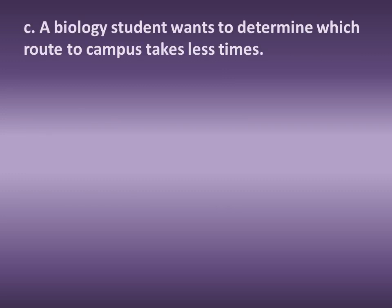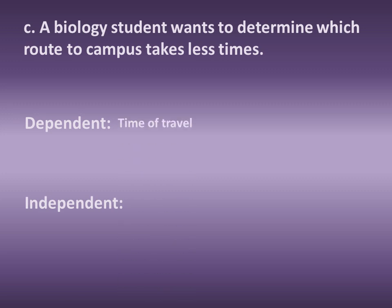Next example: a biology student wants to determine which route to campus takes less time. Maybe you have two or three routes that you're going to look at, and you're going to check how much time it takes the student to get to campus through each route. What are you actually measuring and what are you manipulating? You are measuring how long it takes to get to campus — so the time of travel is the dependent variable — and which route you pick is the independent variable.